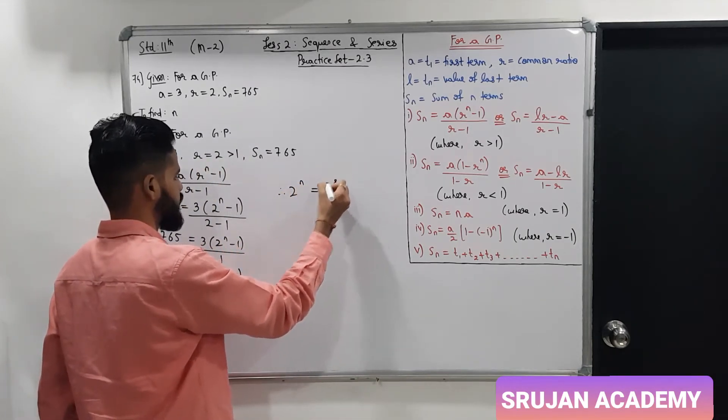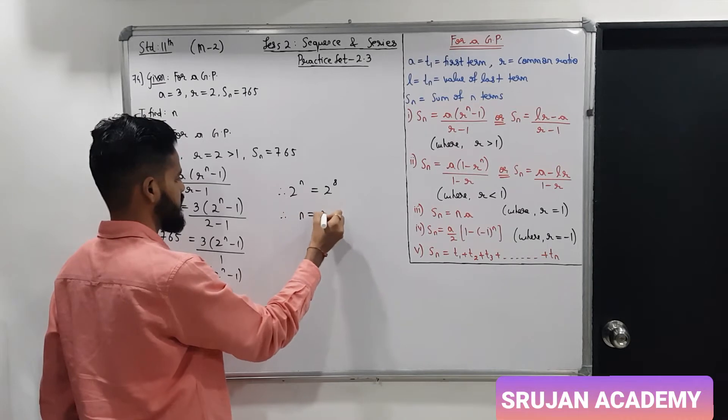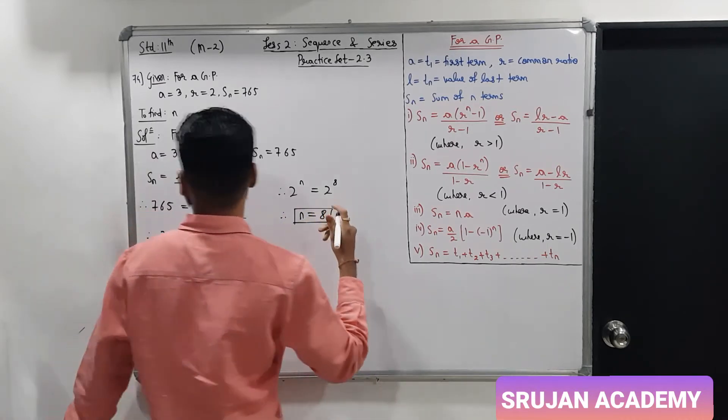So, this 256 is 2 raise to 8. Therefore, 2 raise to n is 2 raise to 8. This is the required answer, n is 8.